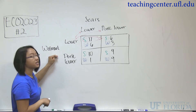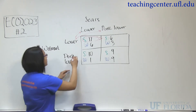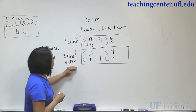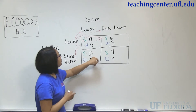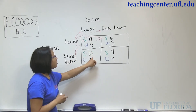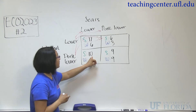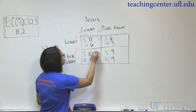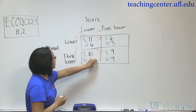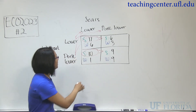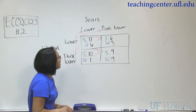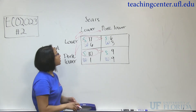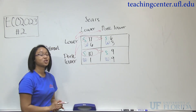Now say Sears sees that Walmart doesn't lower their prices. We still have the option to lower or not lower. If we lower our prices, we'll make a profit of 10. If we don't lower, we'll have only 9 as our profit. So we're still going to lower our prices because our profit is greater. Because we chose to lower our prices regardless of what they do, we have a dominant strategy.